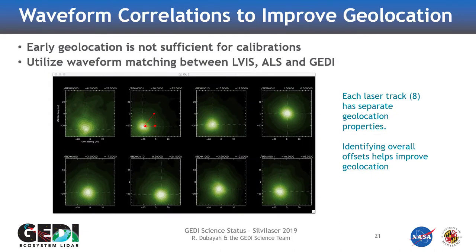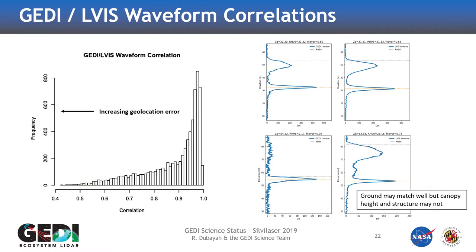One of the things we spend a lot of time doing is, before we have accurate geolocation, we have to find these calibrations. So what we do is waveform correlation, where we compare a GEDI waveform with an airborne LiDAR waveform and shift them until we get the highest correlation. This is how far we have to shift each of the eight tracks to get accurate geolocation initially so that we can start doing calibration. After four, five, six months, you have very beautiful precision orbit determinations and you may not need to do this waveform correlation.